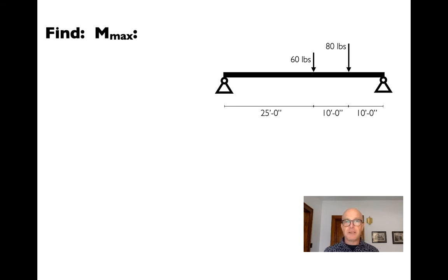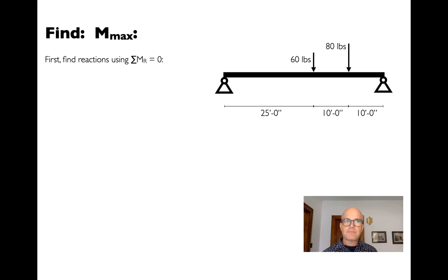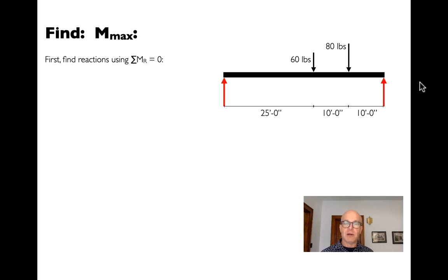Now let's do an asymmetrically loaded example, simplified with no distributed load and ignoring self-weight — just two point loads. Again a 45-foot span, but with a 60-pound load at 20 feet and an 80-pound load at 10 feet from one support. As always, we first find the reactions. The supports are pinned connections, so there are no external moments at either end.